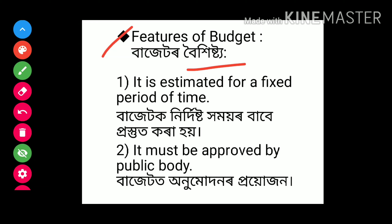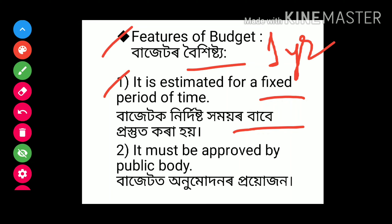First point: it is estimated for a fixed period of time. In India, the time period starts from 1st April to 31st March, and this time period is called the fiscal year or financial year.